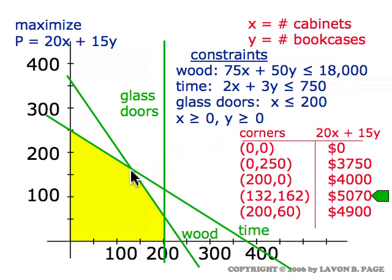And this optimal corner point is also on the time constraint line. So, the coordinates satisfy the equation 2x plus 3y equals 750, which means we're using all 750 hours of our available labor. However, this corner point does not lie on the glass door constraint line, which means x is not equal to 200.